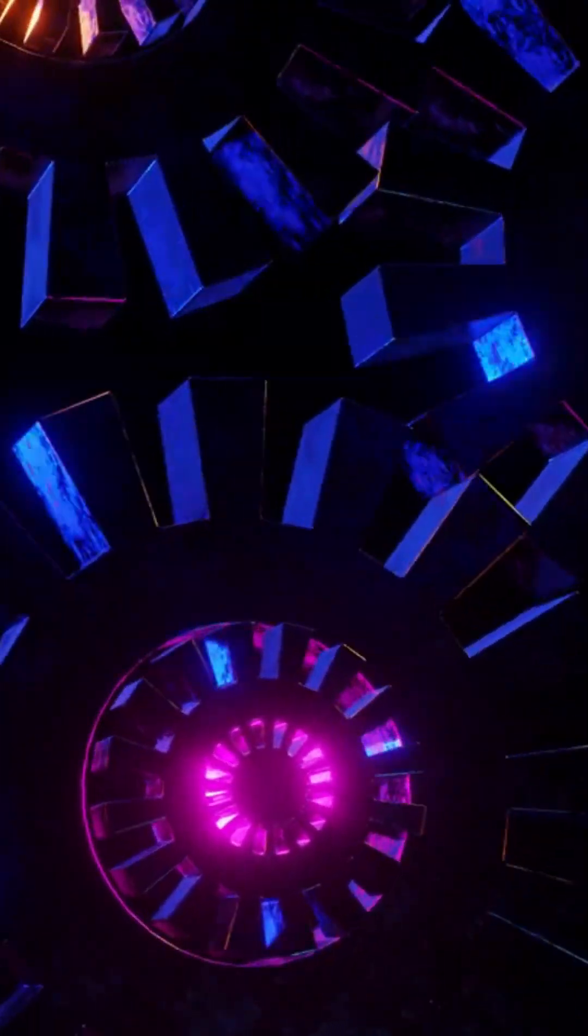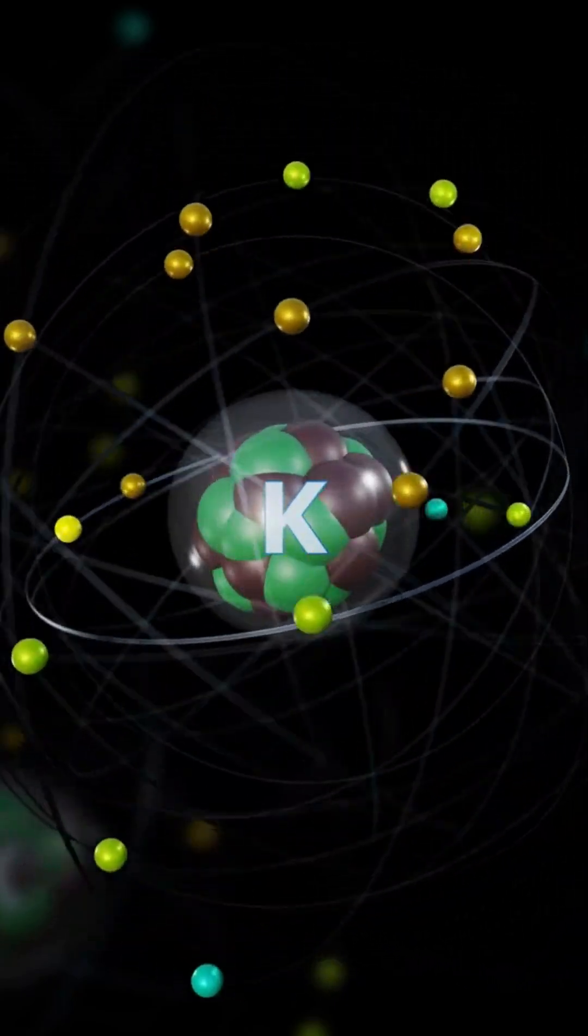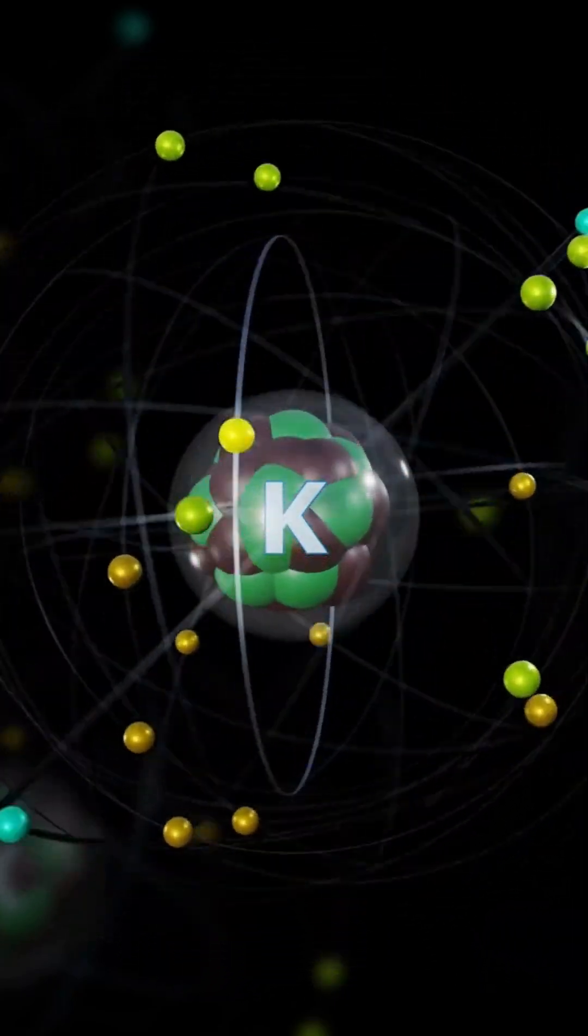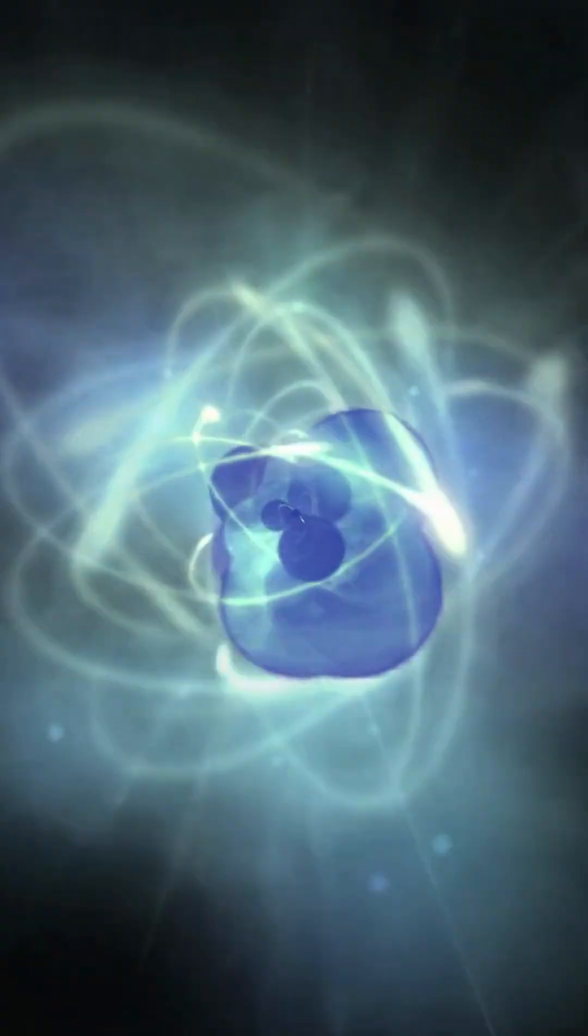With a relative mass of about 1/1836th that of a proton, electrons are significantly lighter. The behavior of electrons is governed by the principles of quantum mechanics. They occupy specific energy levels, or electron shells, around the nucleus.